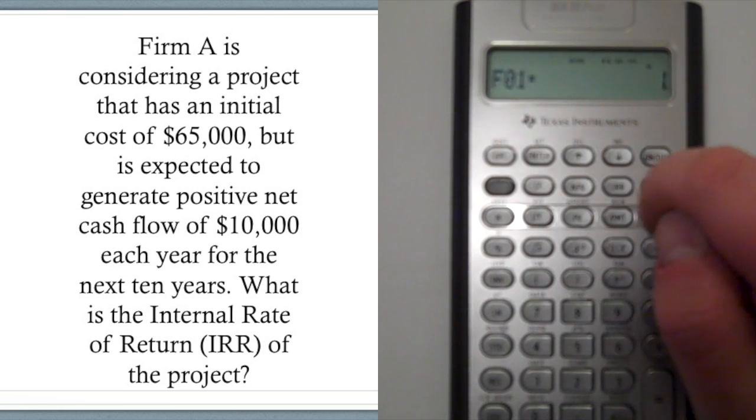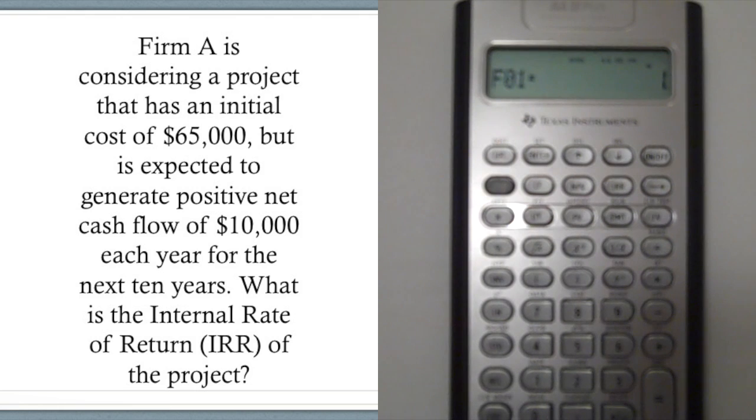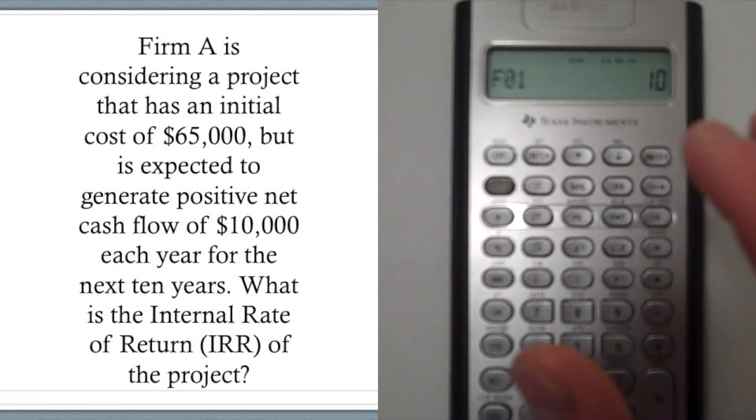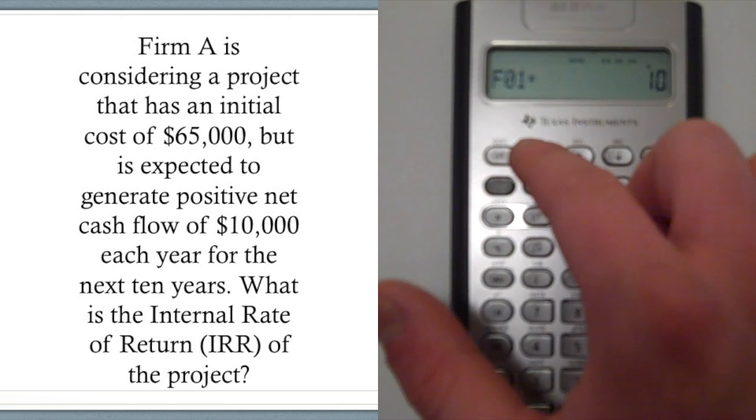Next, we're going to press down one more time. It'll say F01. That's the frequency of the cash flow we just entered. So in this case, because we have a $10,000 cash flow for 10 years, this is going to be 10 because the cash flow we just entered occurs 10 times. And then we'll lock it in.